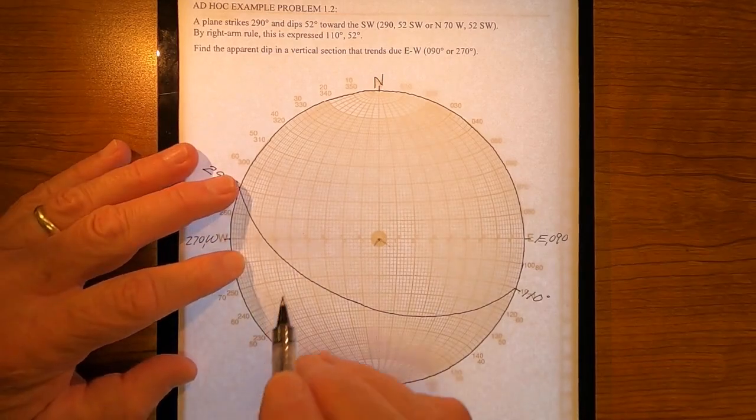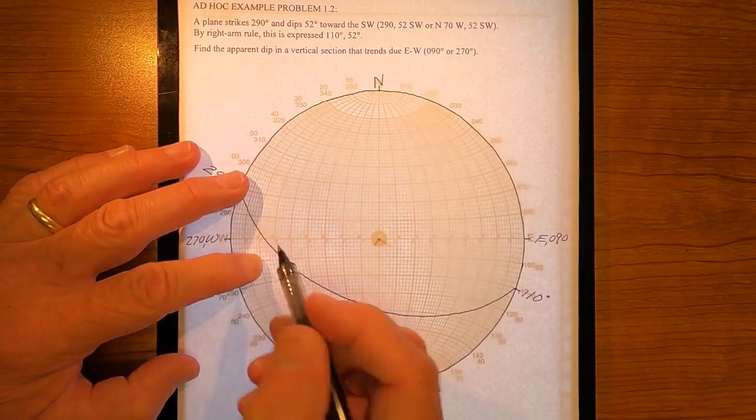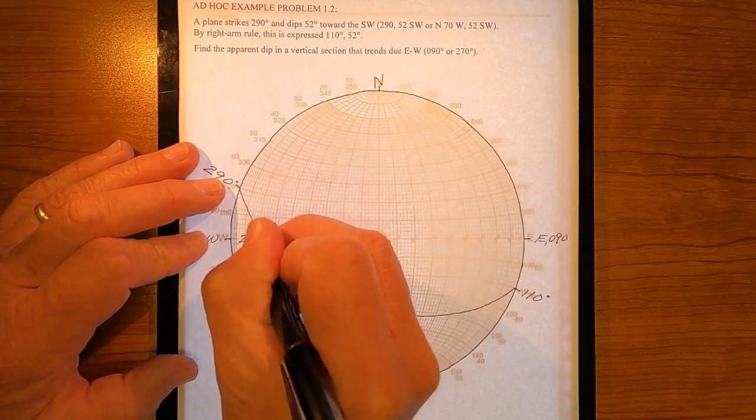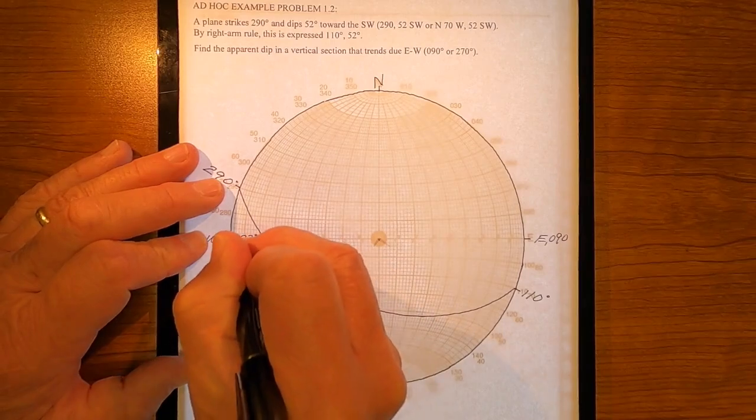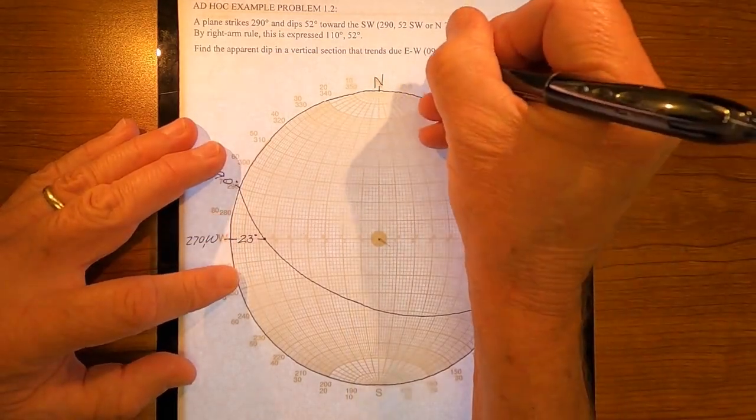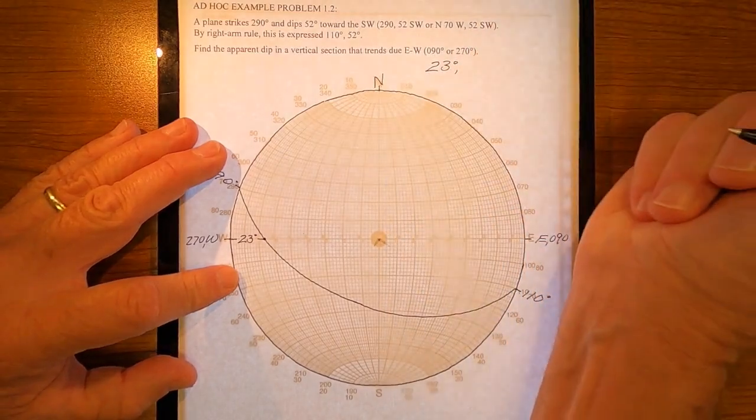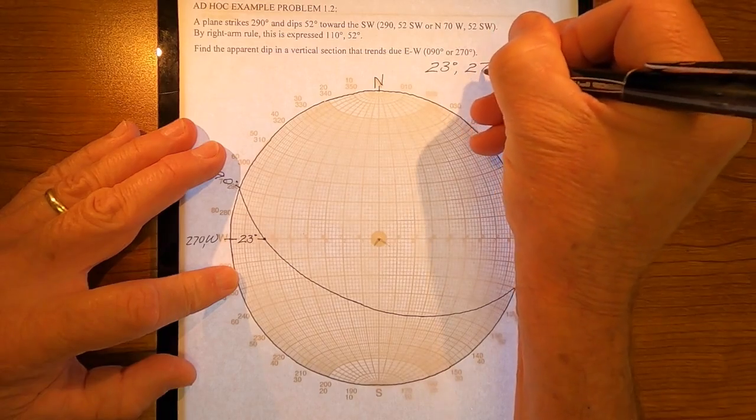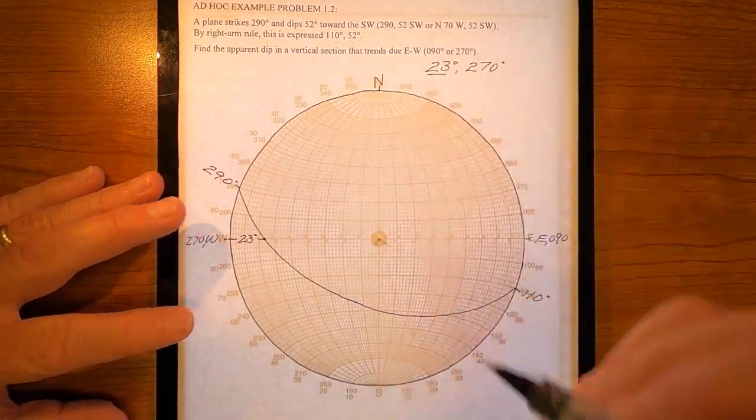So the apparent dip in this case is 23 degrees. The direction of that apparent dip is 270 degrees. The apparent dip is 23 degrees.